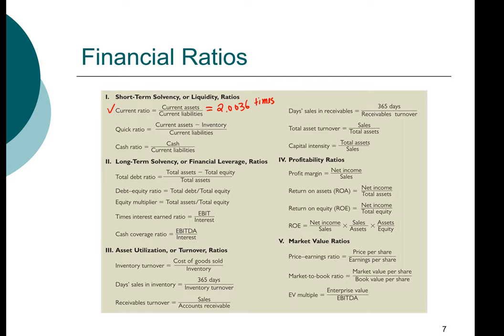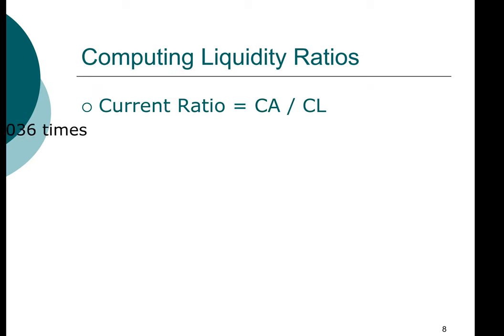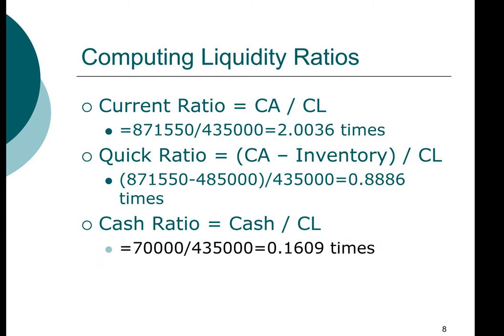What I'm going to ask you to do now is to pause the video and then compute the next two short-term solvency ratios. When you come back, we'll check the answer. Did you get 0.8886 for the quick ratio and 0.1609 for cash ratio? Again, if you don't get the answer, please pause the video. You can also check and see whether or not you get the right numbers from the balance sheet on the next slide.